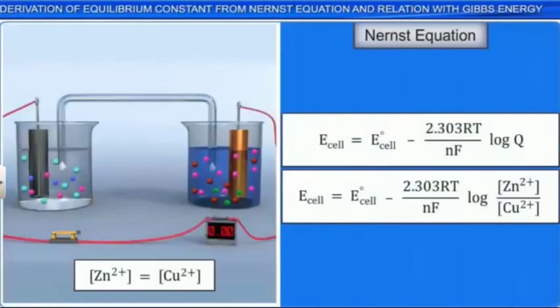It means that Q, the reaction quotient in the Nernst equation, is increasing. This shows that the cell voltage will decrease.